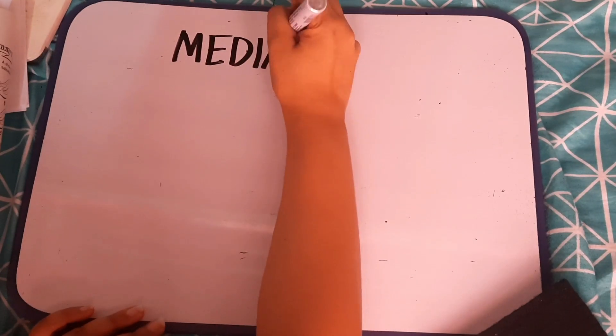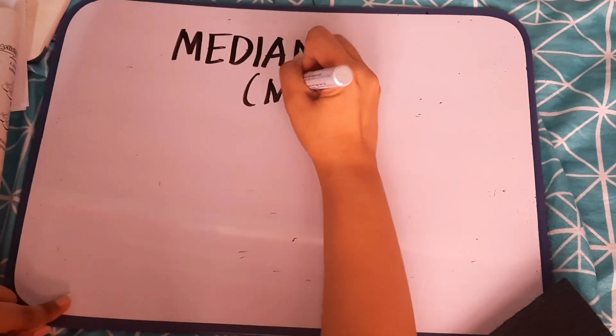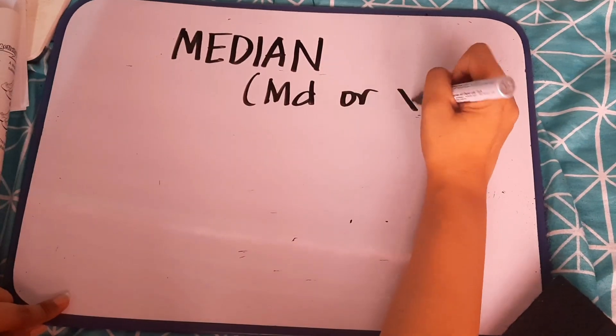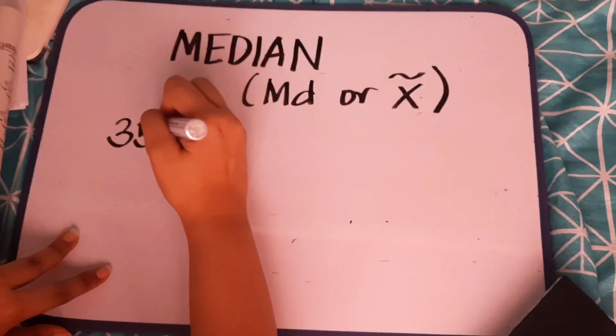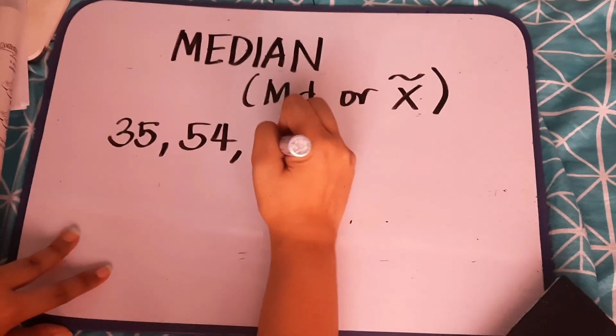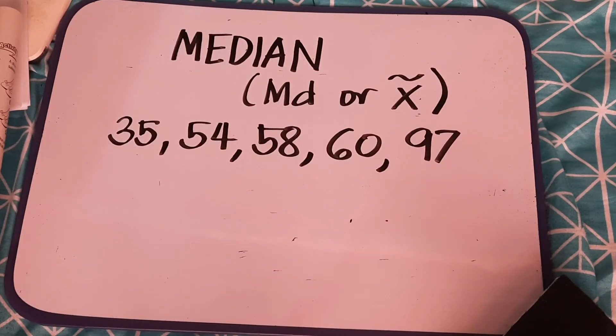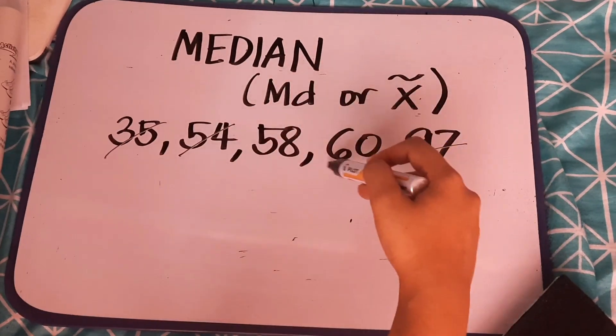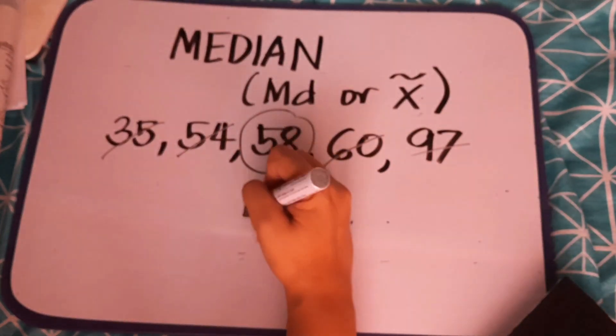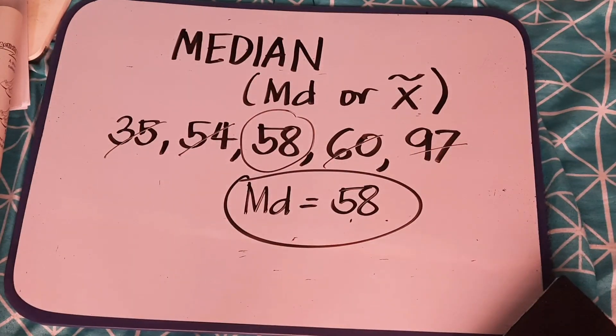Example. Median is the middle value. So, ang ating symbol for median, it can be MD or X with this one. For example, meron tayo ditong value ng 35, 54, 58, 60, and 97. Alin dyan yung middle? Para mas madalian kayo, cancel nyo to. Tapos, cancel nyo rin tong dalawa. So, ano ba yung natira? Sa gitna, 58. So, ibig sabihin, yung median dyan is 58. Madali lang.